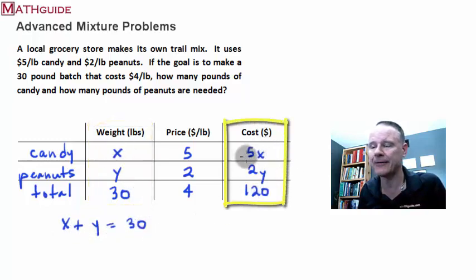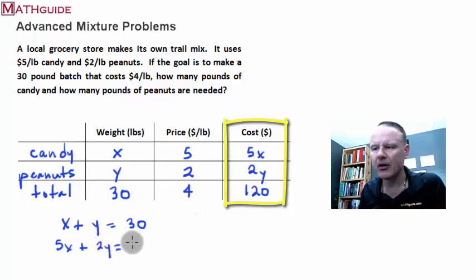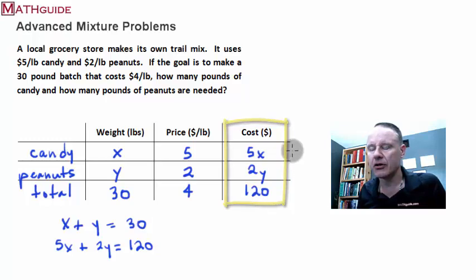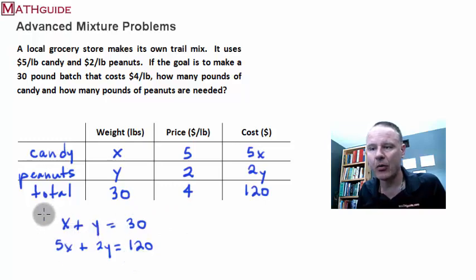Now, if you look at the last column, we know that the cost of the candy, the cost of the peanuts, when we take the two costs, they have to add up to be 120 because that is the total value of this mix. Once we're done putting them together. So in other words, 5X is the candy, 2Y is the peanuts, and 120 is the total. So really those two columns are very helpful because it allows us to form this system of equations.